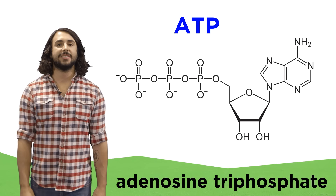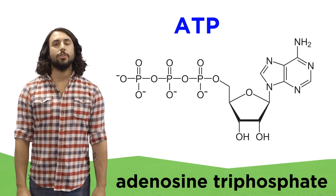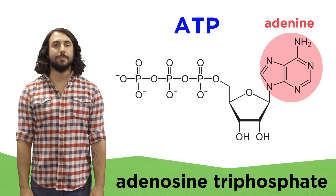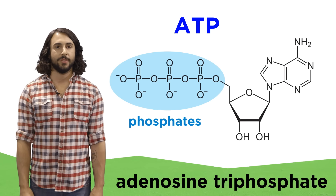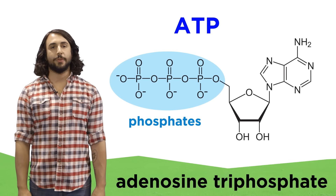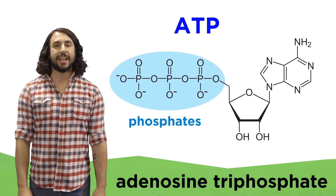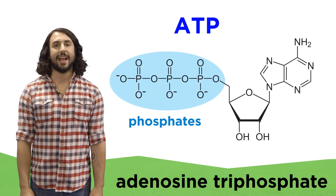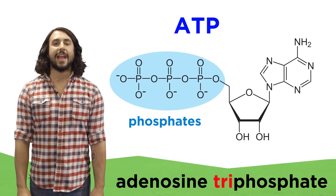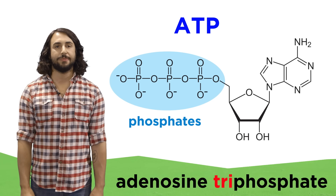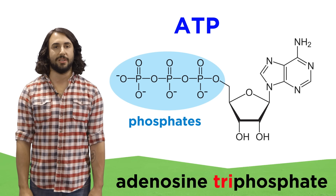ATP is essentially just an RNA nucleotide. Notice the adenine base, the ribose sugar, and the phosphate groups. The only difference is that in a nucleic acid like RNA, each nucleotide has one phosphate, but here there are three, and it is these phosphate groups that give ATP its energy storing properties.